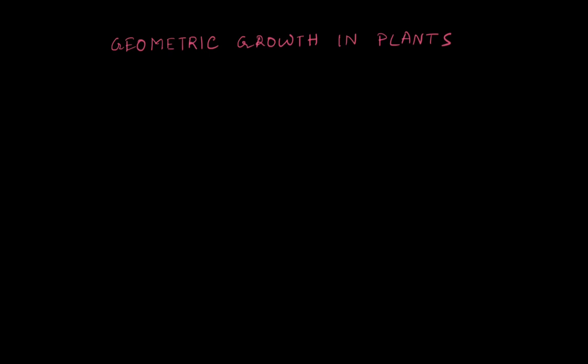Let's take a look at geometric growth in plants. Before we get into plants, let's talk a little bit about bacteria, because when bacteria grow and multiply they too follow geometric growth. Let's say we have one bacterium which can divide, and when these two cells divide they form four bacteria, and then again eight bacteria.